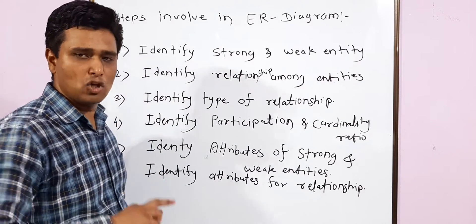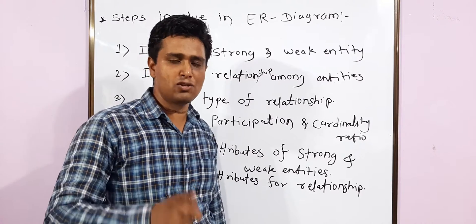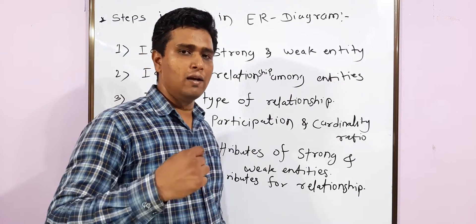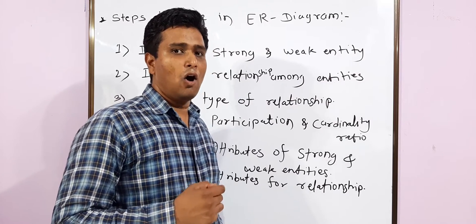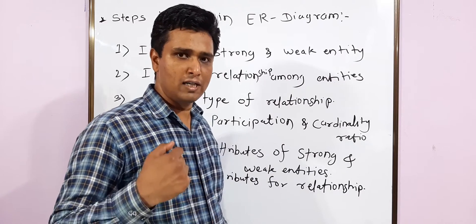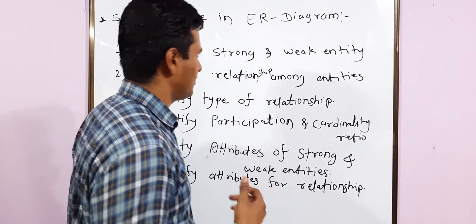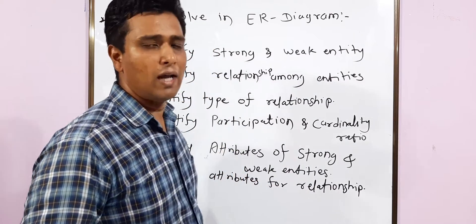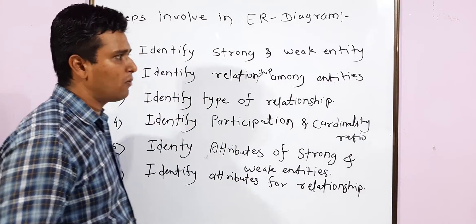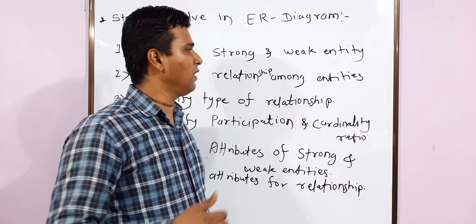First step is identify strong and weak entity. Strong entity is what which has a primary key like Aadhaar ID, unique mobile number, or we can assign an auto-generated primary key or index. Weak entity does not have primary key. Second step is identify relationship among the entities.